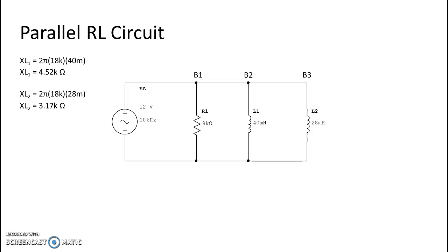So these are in parallel. We're going to combine our two inductive reactances to make total inductive reactance. So we're going to use our inversion formula. So we take 1 over 4.52k ohms plus 1 over 3.17k ohms. Hit the equal sign and then do 1 over that equals again and you should get your answer of 1.86k ohms.